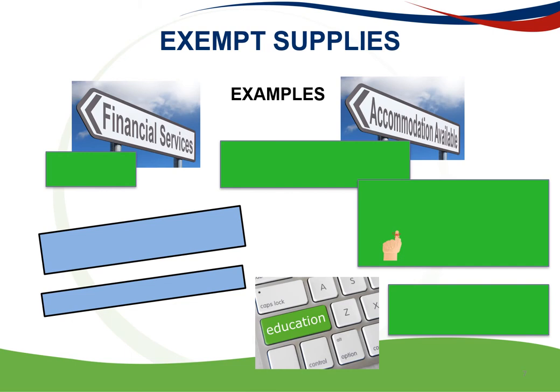No output tax is levied in respect of exempt supplies and no input tax relating to expenditure on these supplies may be claimed. There are also quite a number of examples of exempt supplies. First, financial services are exempt. However, the fees relating to these financial services are not exempt and are usually levied at the standard rate — for example, bank charges.